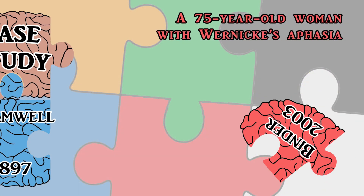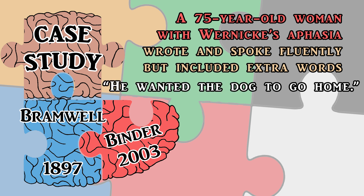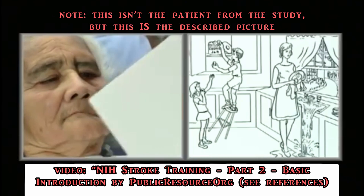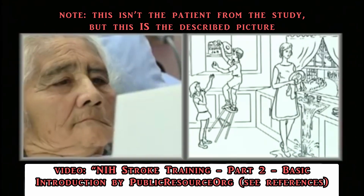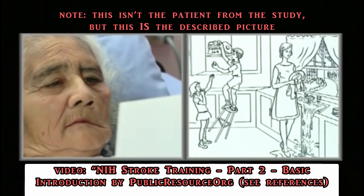For example, in 2003, a study was published about a 75-year-old woman who had been diagnosed with Wernicke's aphasia. She tended to write and speak fluently, but her sentences lacked concrete nouns and instead included extra words. When she was asked to write down the sentence "he wanted the dog to go home," she instead wrote "the boys run and the dog is all home." When she was asked to describe a picture, what she said included this sentence: "And that's the boy going to getting with it over there."